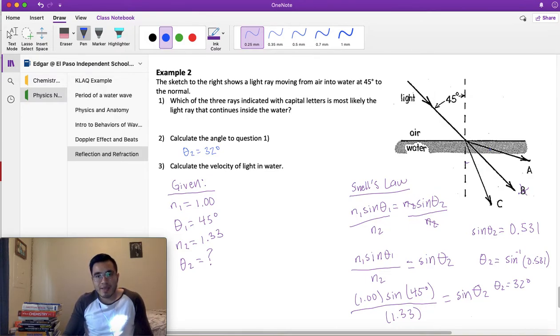Now, ray A cannot be the answer because this is more than 45 degrees. If we measure the angle from normal to A, it's like maybe 60 around there. And then C, notice it's before ray B, so it is less than 45 degrees. That's the only one that could be 32. So this is 32 degrees. Therefore the answer is C. So we write it down: ray C.